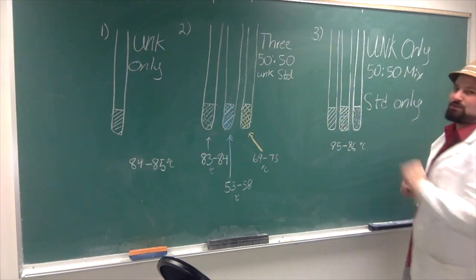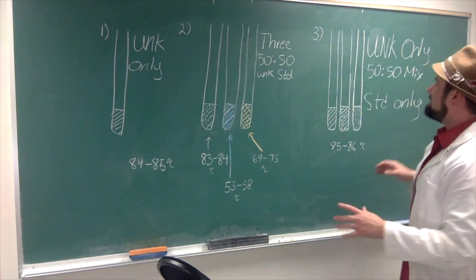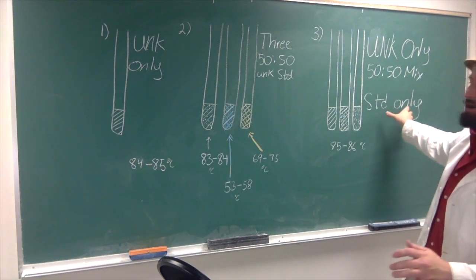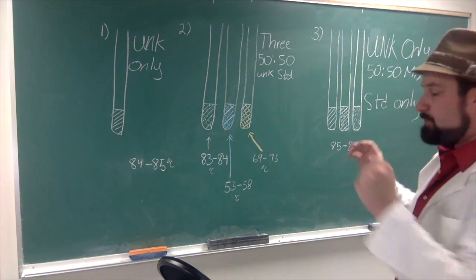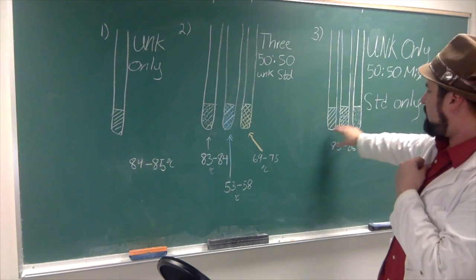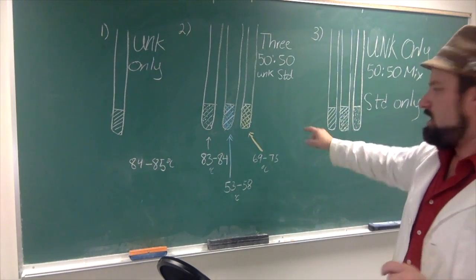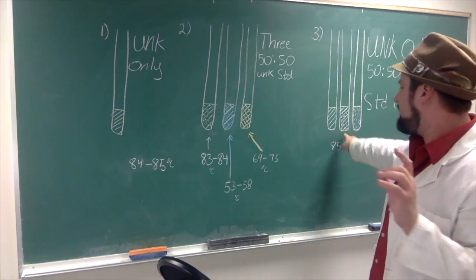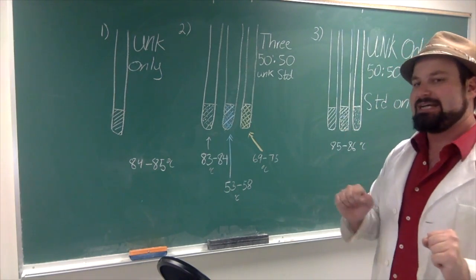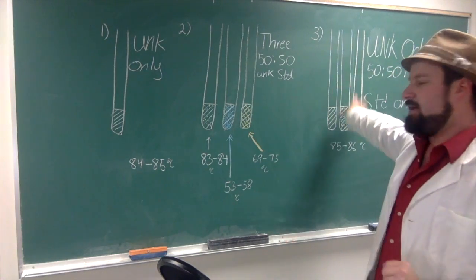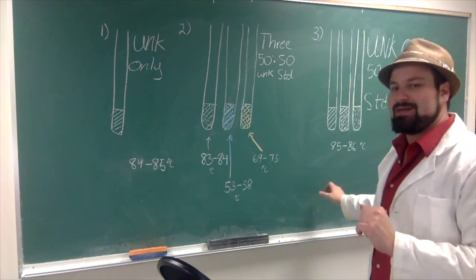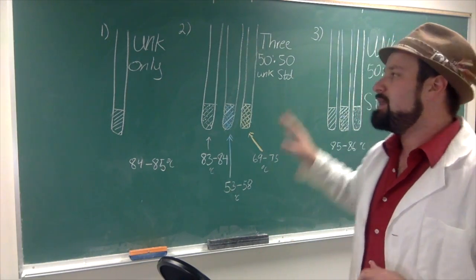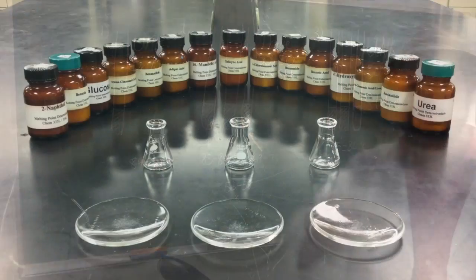How do we verify that? We do one last run. Our last run is going to be the unknown, a 50-50 mix, and our standard only. What that means is if we have all three — unknown only, standard only, and a 50-50 mix of the two — and all three of them melt at the exact same time, we know that's the same compound. For our example here, they did 85 to 86 — not exactly the same, but in the same range — that is probably our compound.